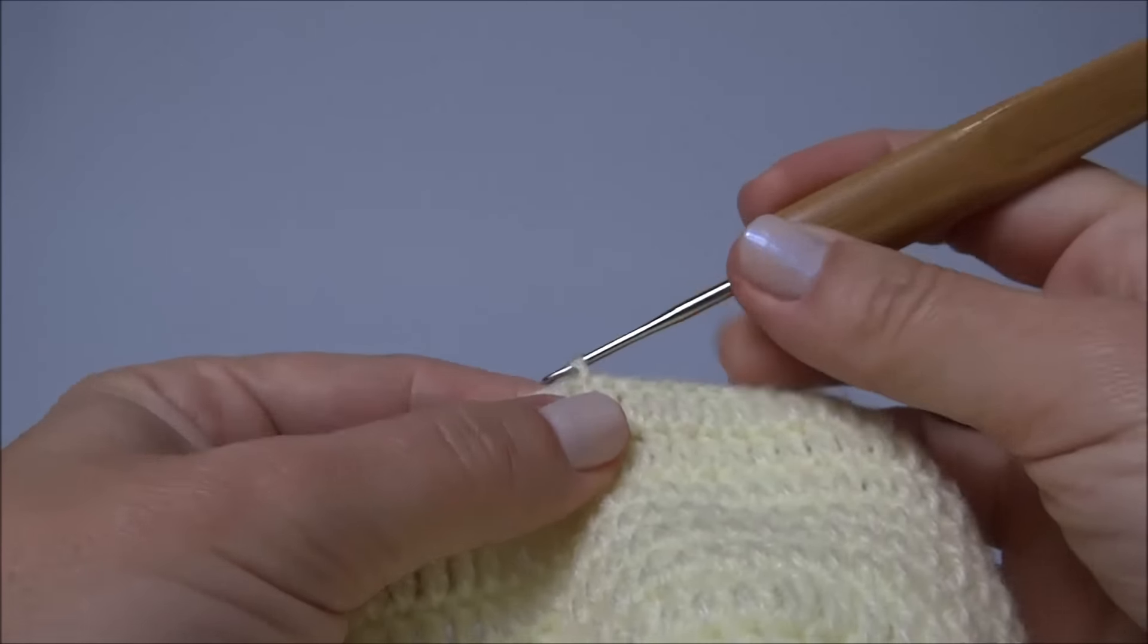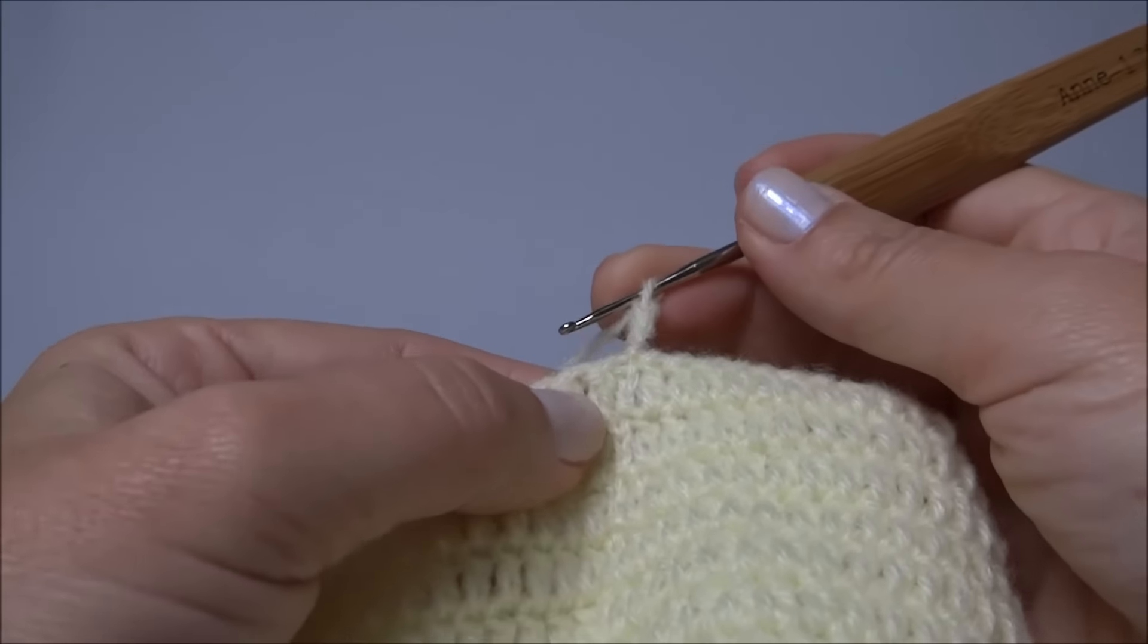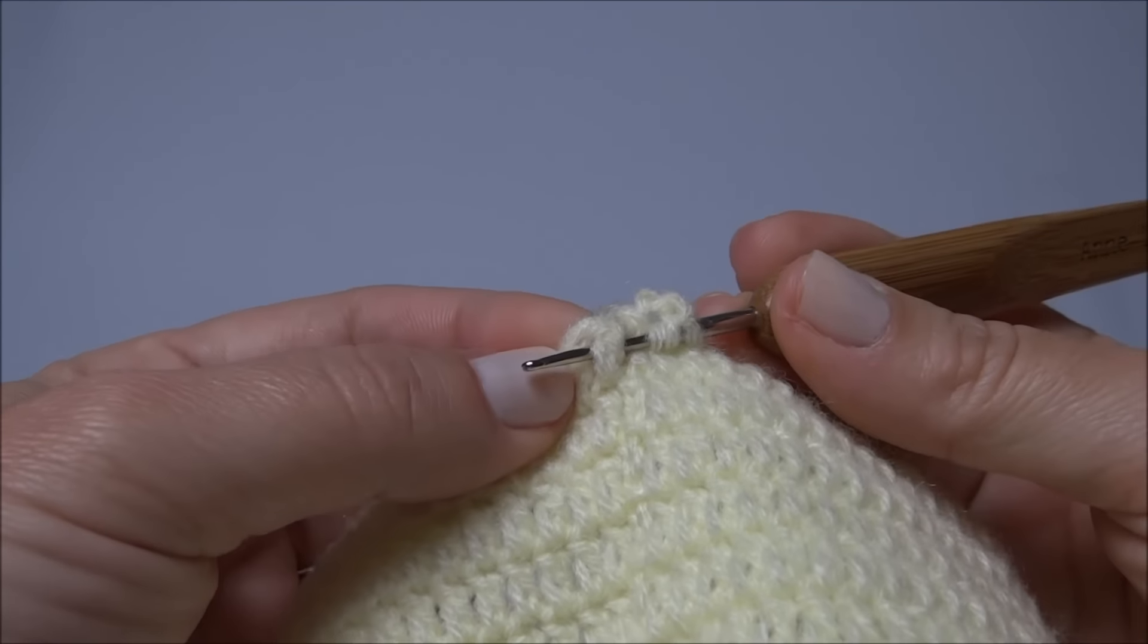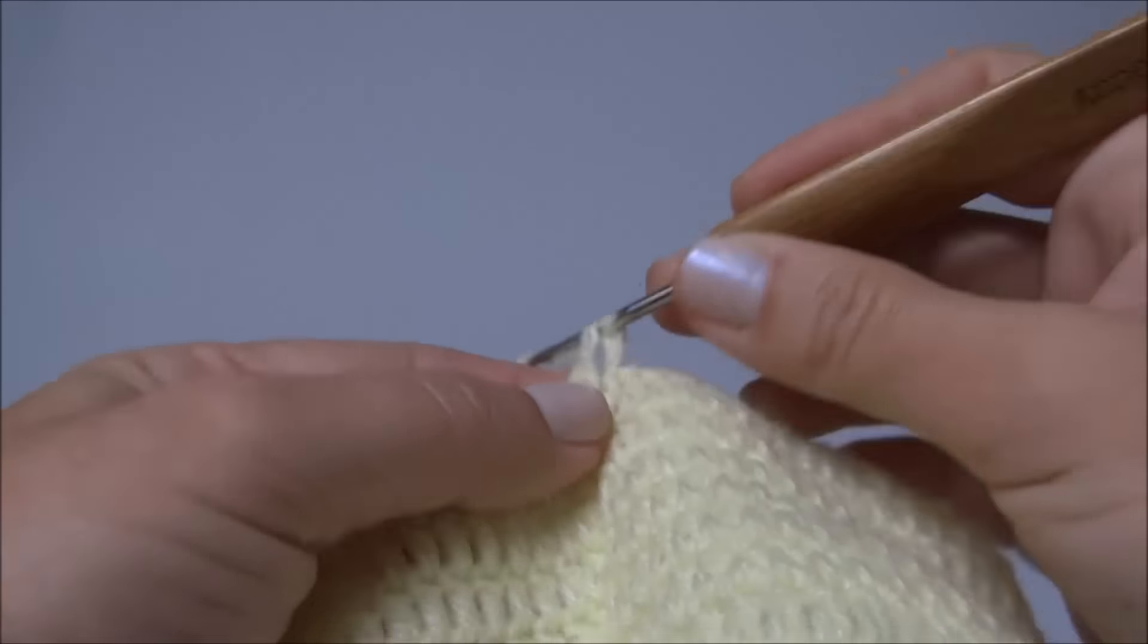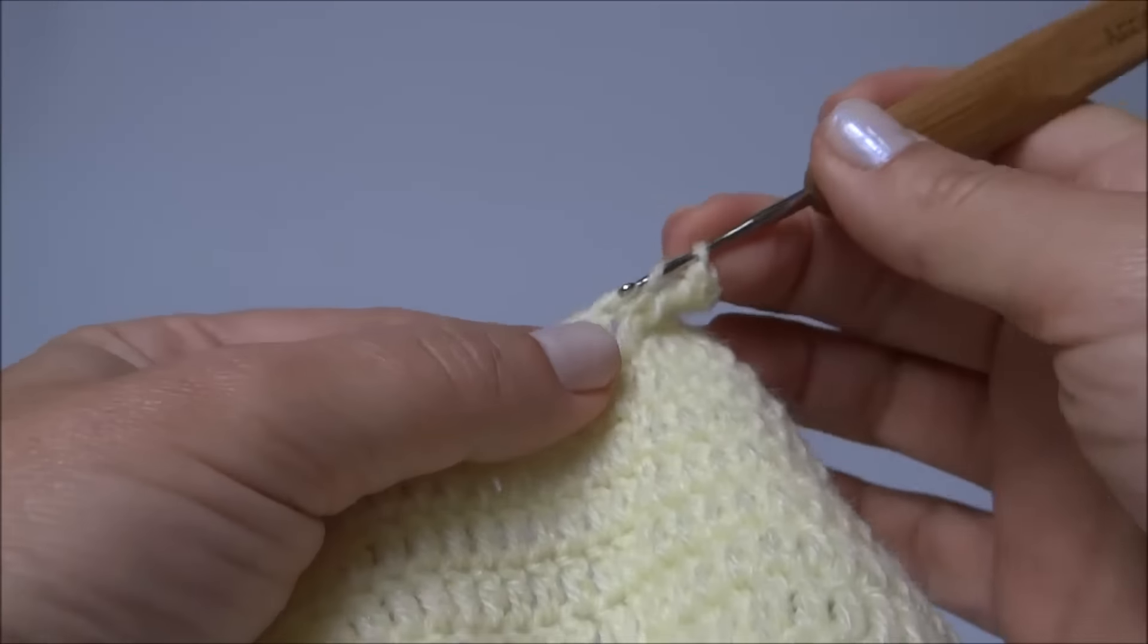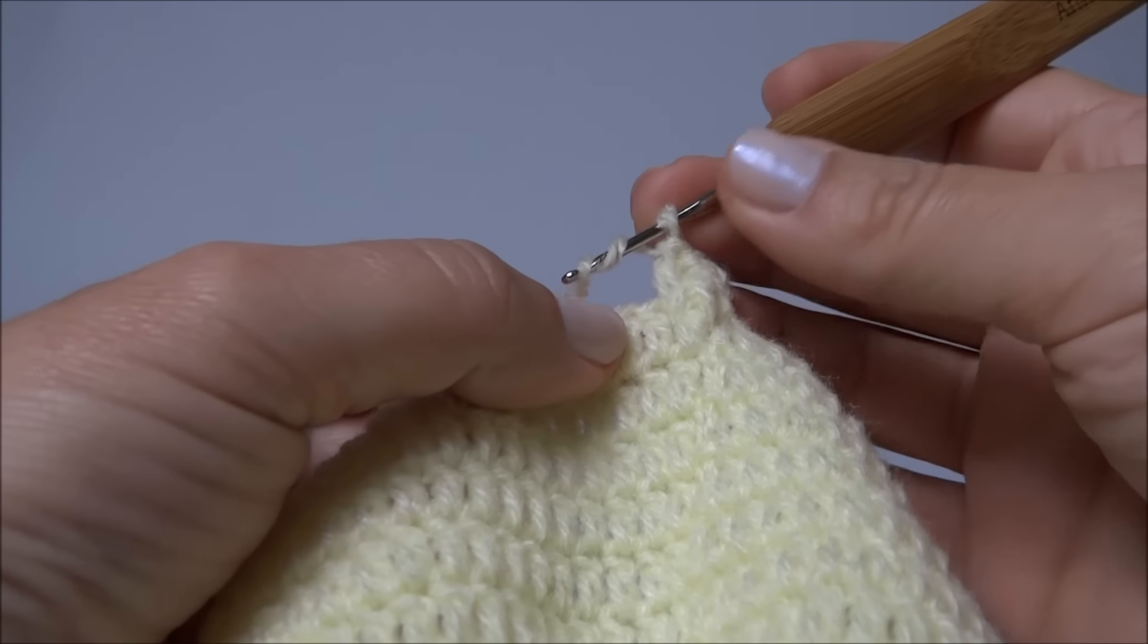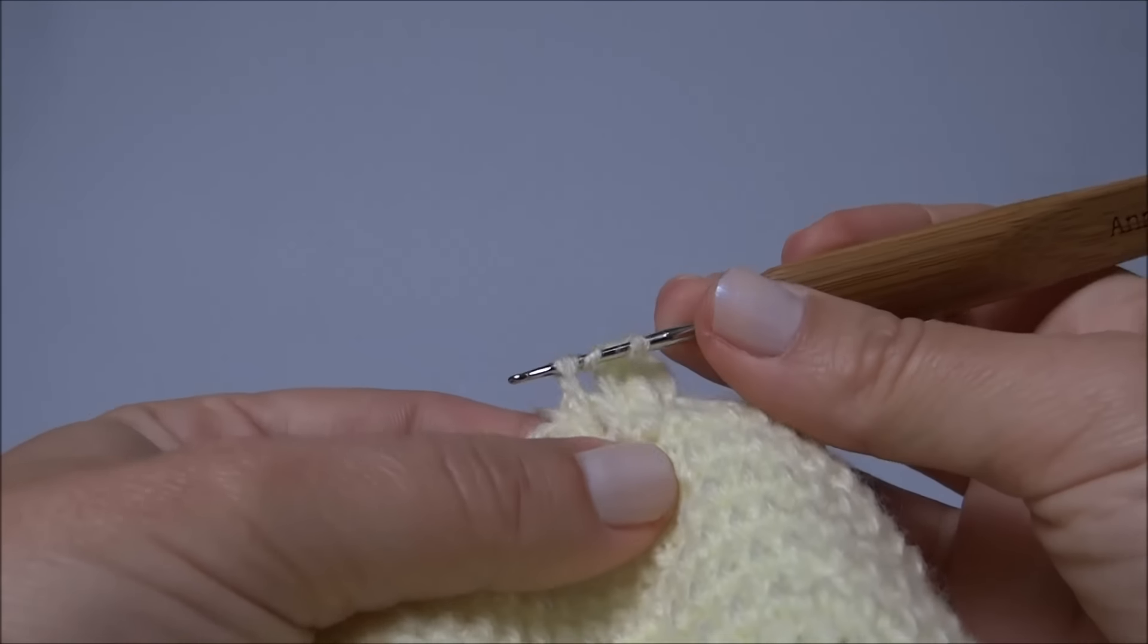Agora vamos trabalhar a barra do gorro. Então, faço três correntinhas, no próximo ponto faço duas laçadinhas na agulha, passo a agulha por trás do ponto, puxo o fio e faço meu ponto alto duplo em relevo. Próximo ponto, um ponto alto. Próximo ponto, duas laçadinhas na agulha e faço o meu ponto alto duplo em relevo.